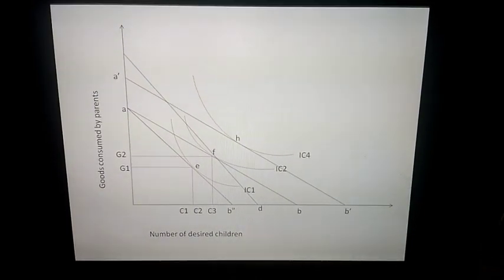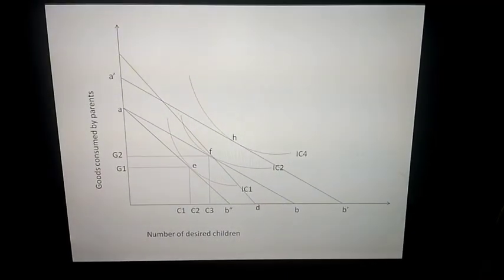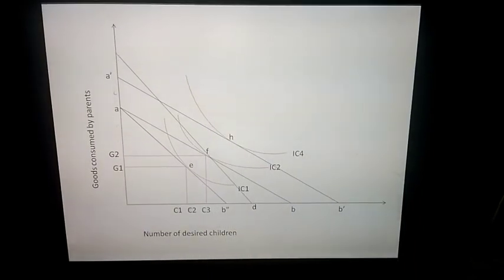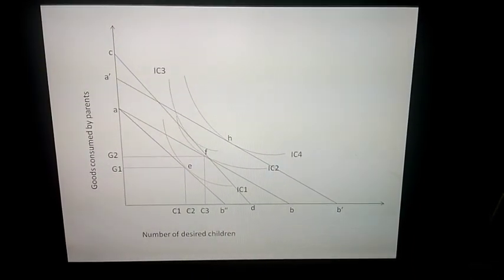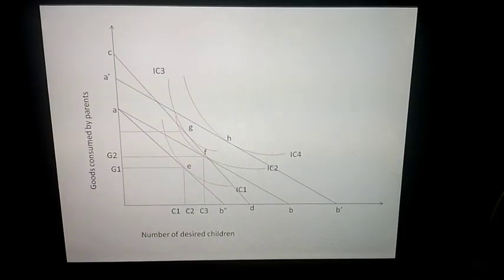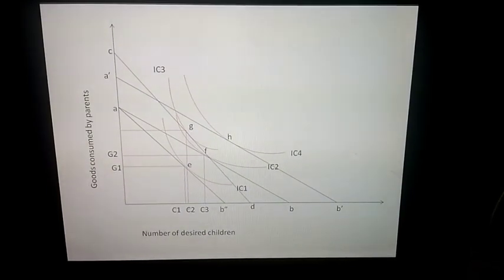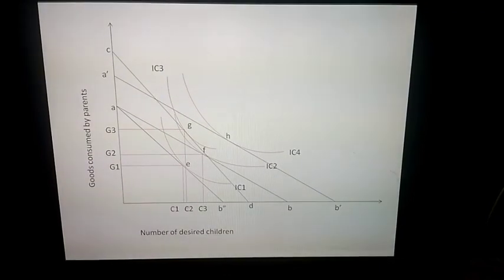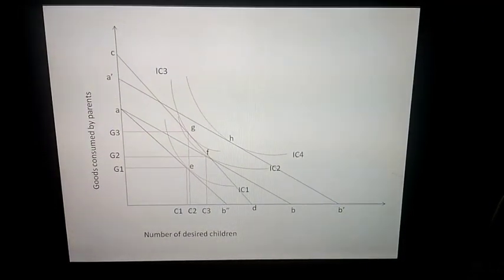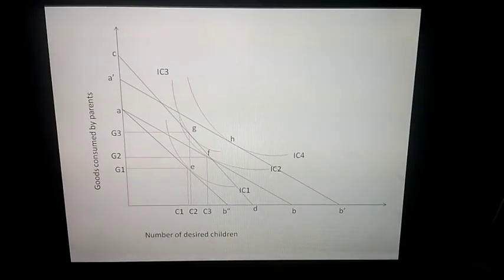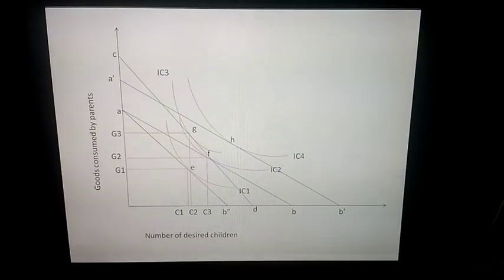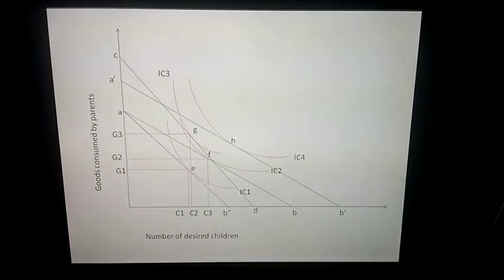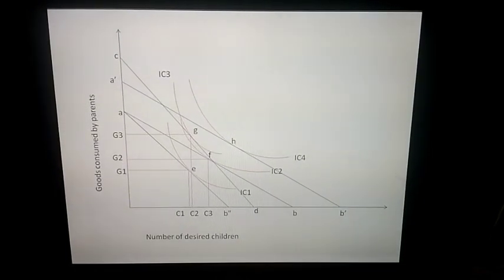Now let's consider another situation where the price of bearing a child has increased — that is, the tax on having more children has increased — but at the same time income of the family also increases. So now income has raised but the price of having children has also raised. The new budget line is CD. IC3 is the indifference curve and G is the optimum point. At this point, the family can have OG3 goods and OC2 number of children.